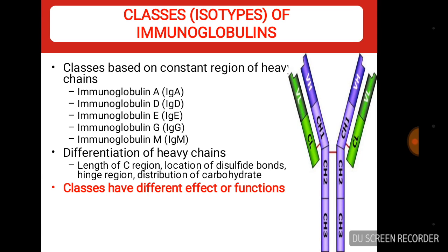Classes of immunoglobulins. Immunoglobulins are classified into five classes: first is immunoglobulin A, denoted as IgA; immunoglobulin D, IgD; immunoglobulin E, IgE; immunoglobulin G, IgG; and immunoglobulin M, IgM. The differentiation of the heavy chain depends on the length of the constant region (C region), location of disulfide bonds, hinge region, and distribution of carbohydrate.